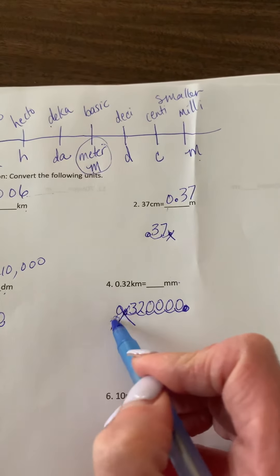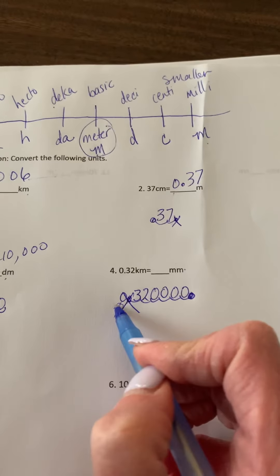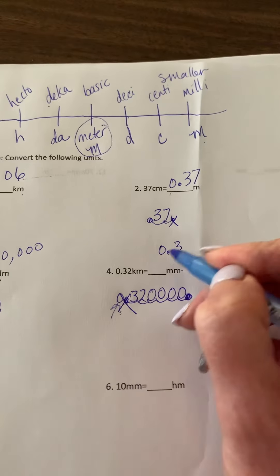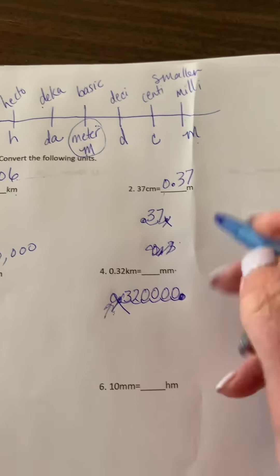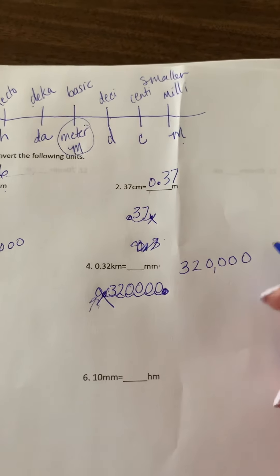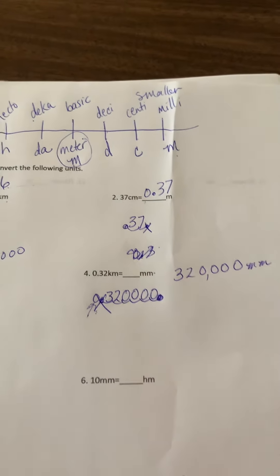Now, of course, we wouldn't put that there. That was a placeholder to show that there was no whole numbers originally. So 320,000 millimeters.